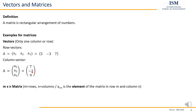For example, this one would be a_21. In more general form, the element in the upper left is always a_11 — first row, first column. At the end of the first row, we're still in the first row, so the index is a_1n — first row, nth column.